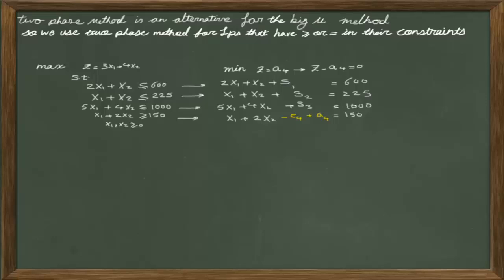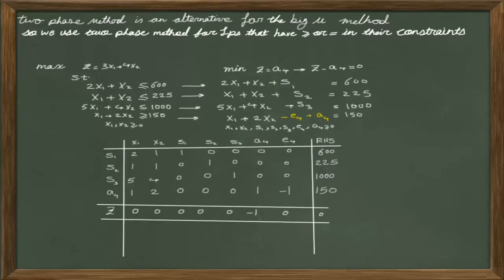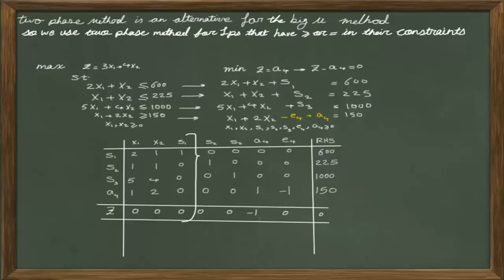We need to standardize this objective function. We know that all decision variables have a positive value in a linear programming problem, so we are good to start the simplex table and enter the coefficients of the decision variables. In the row of z, we replace the coefficients with those of the new phase 1 objective function. In the column of any basic variable, the coefficient must be 1 in that variable's row and 0 everywhere else.